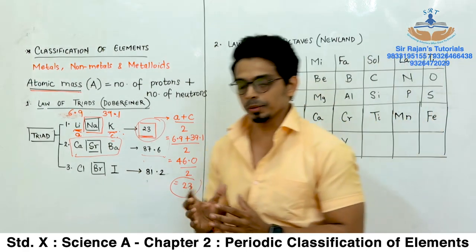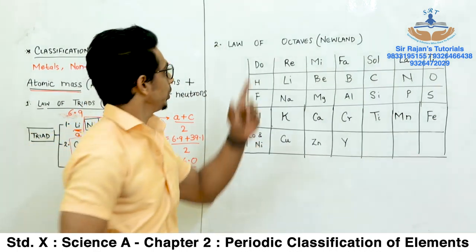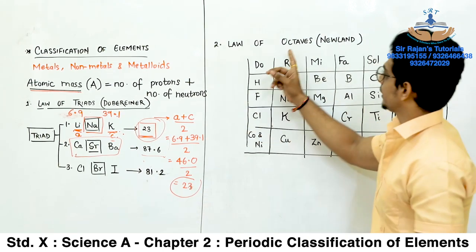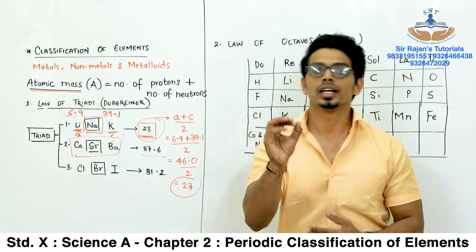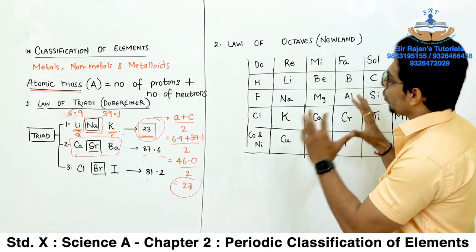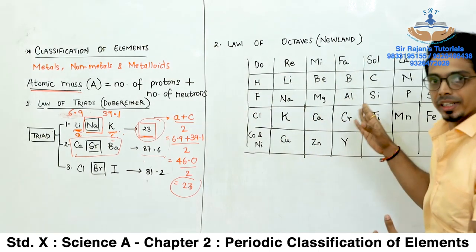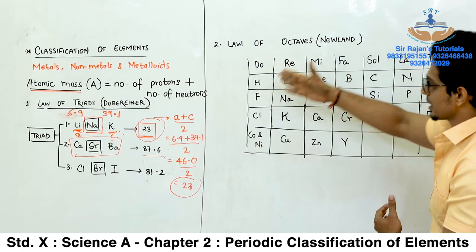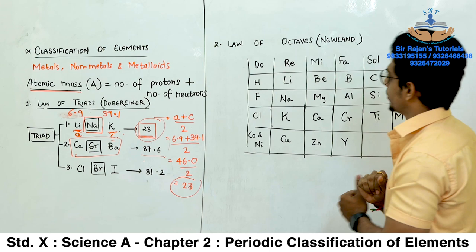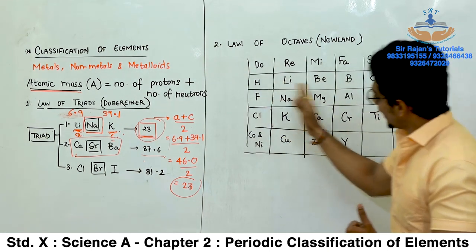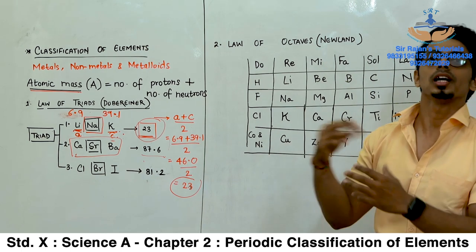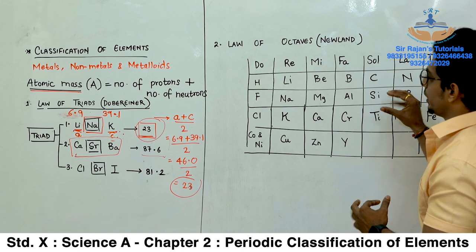Something struck his mind — it is similar to the octaves in music: Do, Re, Mi, Fa, Sol, La, Ti — or in Indian music: Sa, Re, Ga, Ma, Pa, Dha, Ni. The same thing happened with elements: Fluorine had properties similar to Hydrogen. Today we know that Fluorine, Chlorine, Bromine, Iodine are Halogens, so they have the same properties. Chlorine's properties are similar to Fluorine, and Fluorine's properties are somewhat similar to Hydrogen. Lithium, Sodium, Potassium also show the same pattern — these are the triads again.